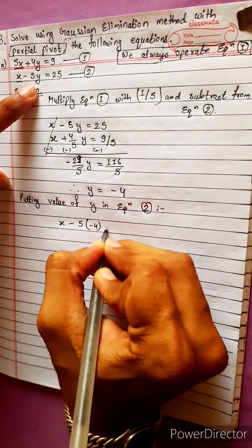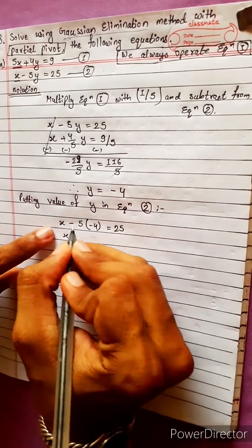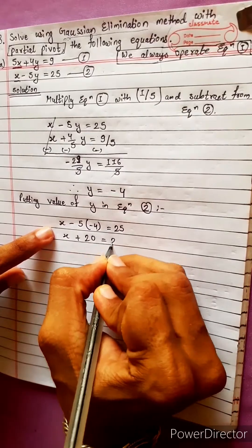X minus 5 into minus 4 equals 25. X minus minus gives plus, so x plus 20 equals 25.